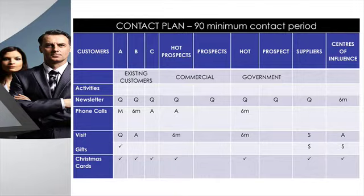It's then about thinking who you want to invite to these things. You might only invite selected C-class clients to certain events, and with gifts we said we'd only give selected clients, suppliers, and centers of influence a gift. We said everybody gets the newsletter quarterly, although centers of influence mainly get every second one. For phone calls, A-class clients we call monthly — just a quick catch-up — and B-class clients six-monthly.